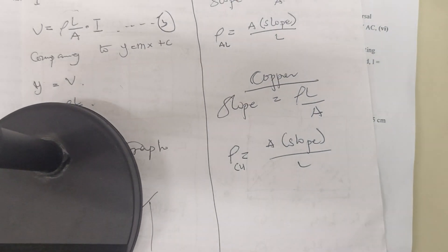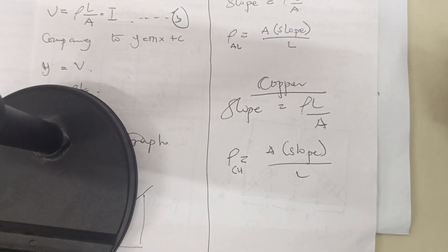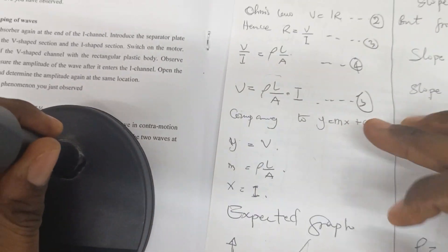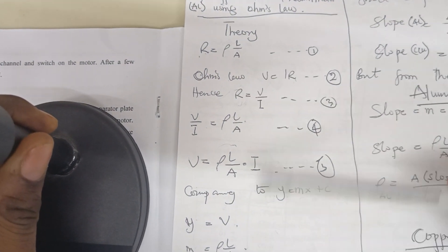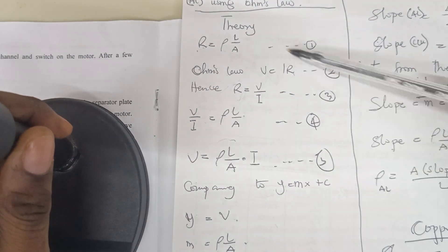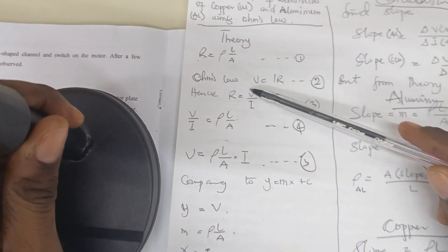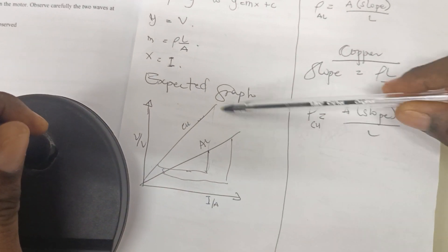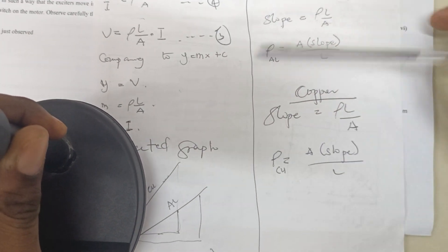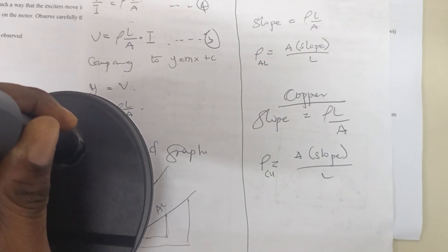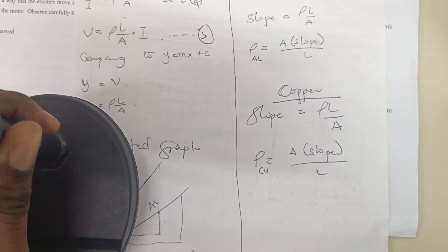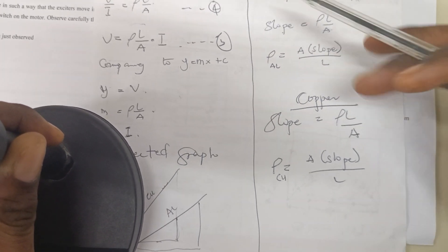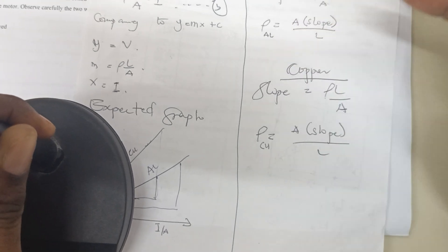This is how you find the resistivity for the two metals. First, develop the theory. Then draw the V–I graph and find the slopes for each metal under the calculation section. Finally, use each slope along with the known length and area to calculate the resistivity for each metal. Thank you.